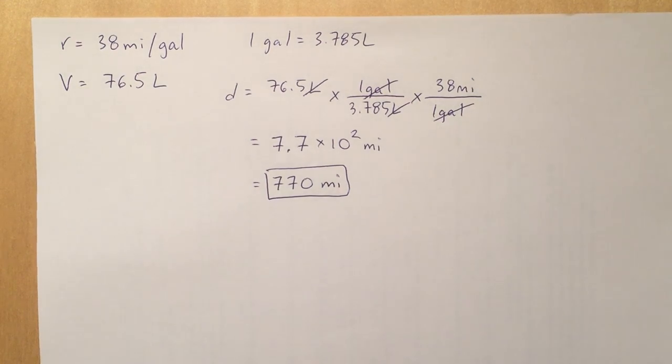Okay, in the second of your two problems, you're given these two numbers: 38 miles per gallon and the volume of gas that you've been able to use is 76.5 liters.